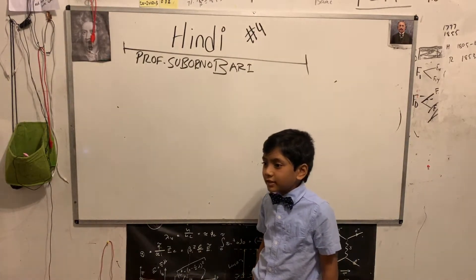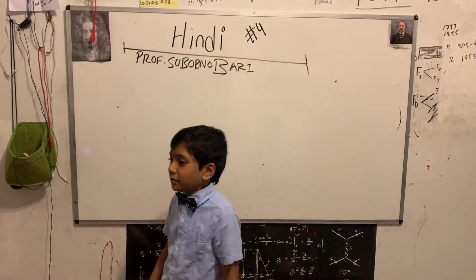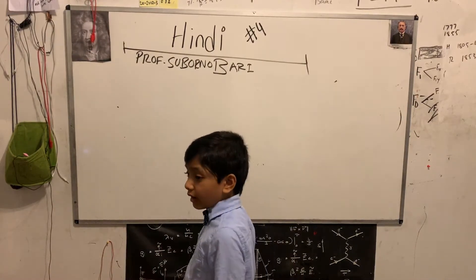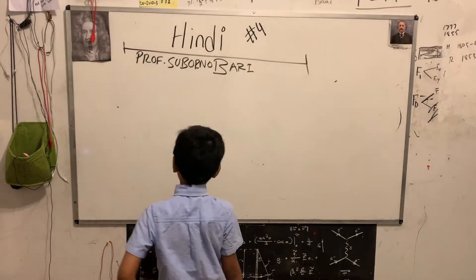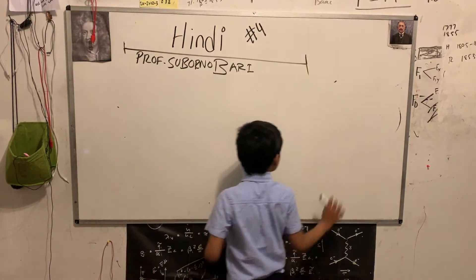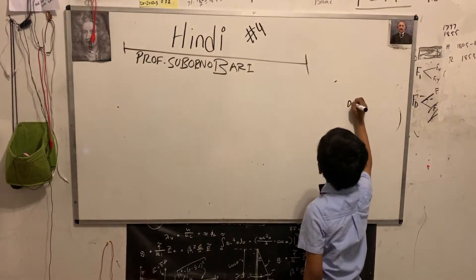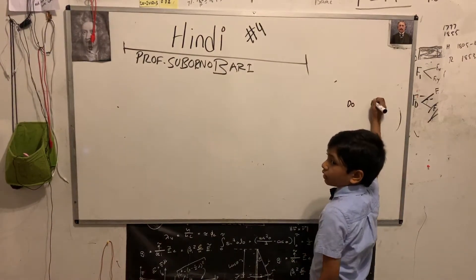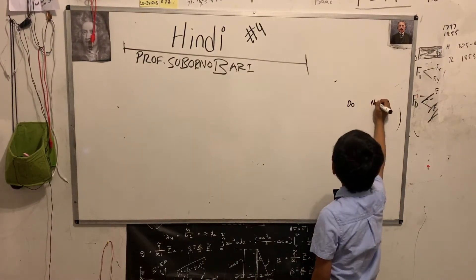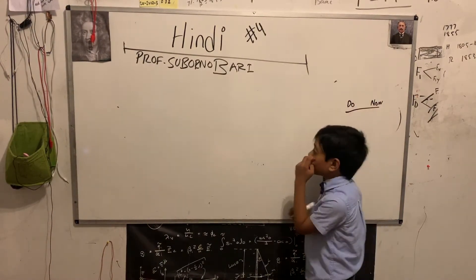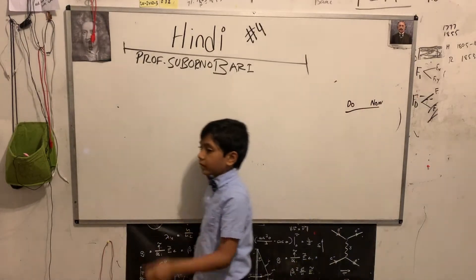We're going kind of slow, but there are 44 letters — remember that. So for the do-now, I want you guys to come up and write the letters from the past.